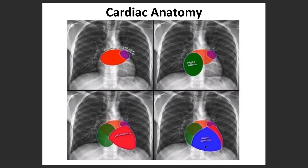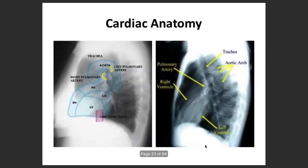One has to keep this in mind always, because a lot of times, not just for x-rays but also when someone is doing a procedure in EP or even in interventional cardiology, one should know where those structures are. Now coming to the lateral view: the trachea, right pulmonary artery, left pulmonary artery, and the aortic arch branches.